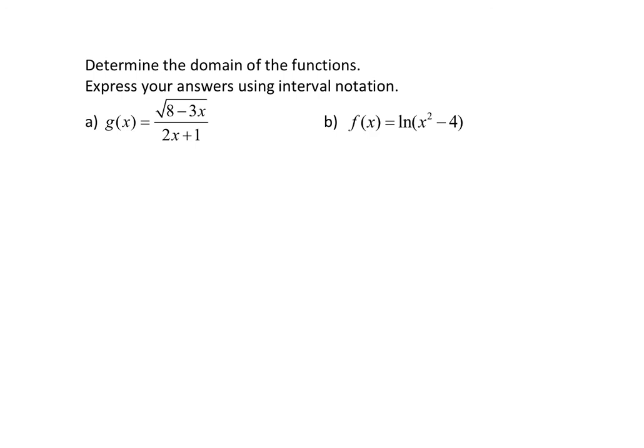Let's look at the numerator. Because we have a square root in the numerator, we definitely have some domain restrictions. Remember, you cannot have a negative inside of a square root if we are in the real number system, because a negative in a square root would create an imaginary number. What is inside that square root — the fancy name for this, just to review a little vocabulary — is called the radicand.